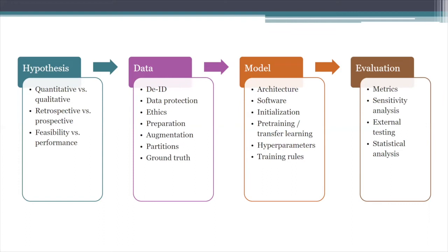Here is a broad outline of features to think about when looking at a research project and its publication. Starting with the hypothesis: is it quantitative or qualitative? Is it a retrospective study or a prospective evaluation? To date, almost everything has been retrospective. Is this a study of feasibility of a technique, or actually looking at performance — doing a non-inferiority comparison to current methods, such as how physicians might interpret an image?